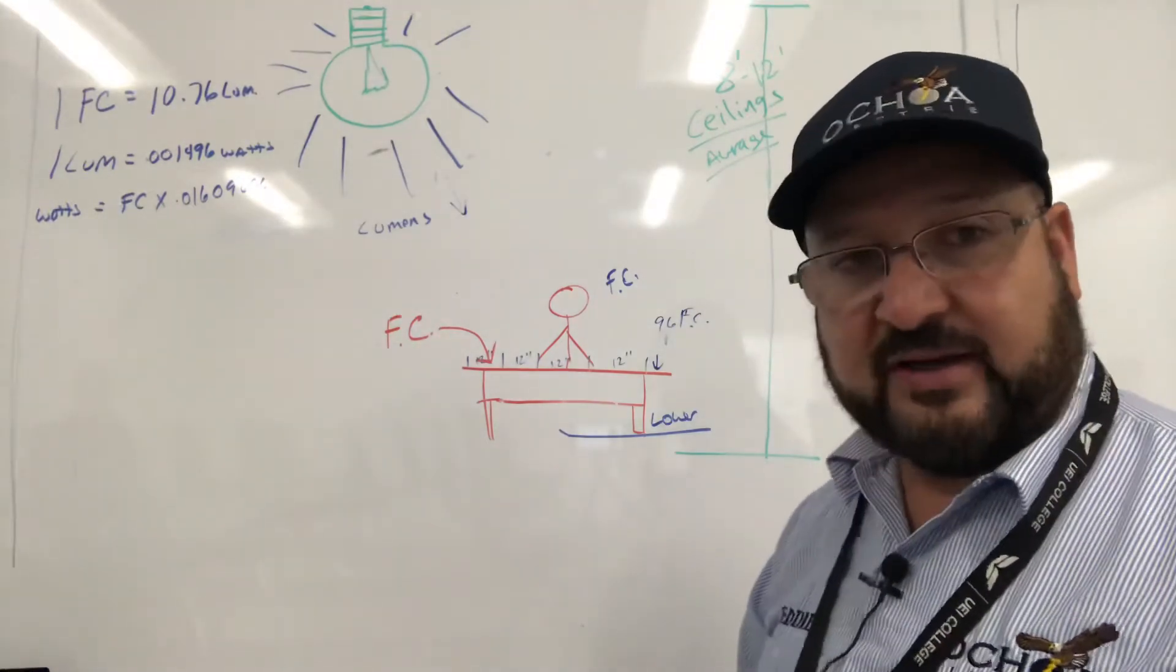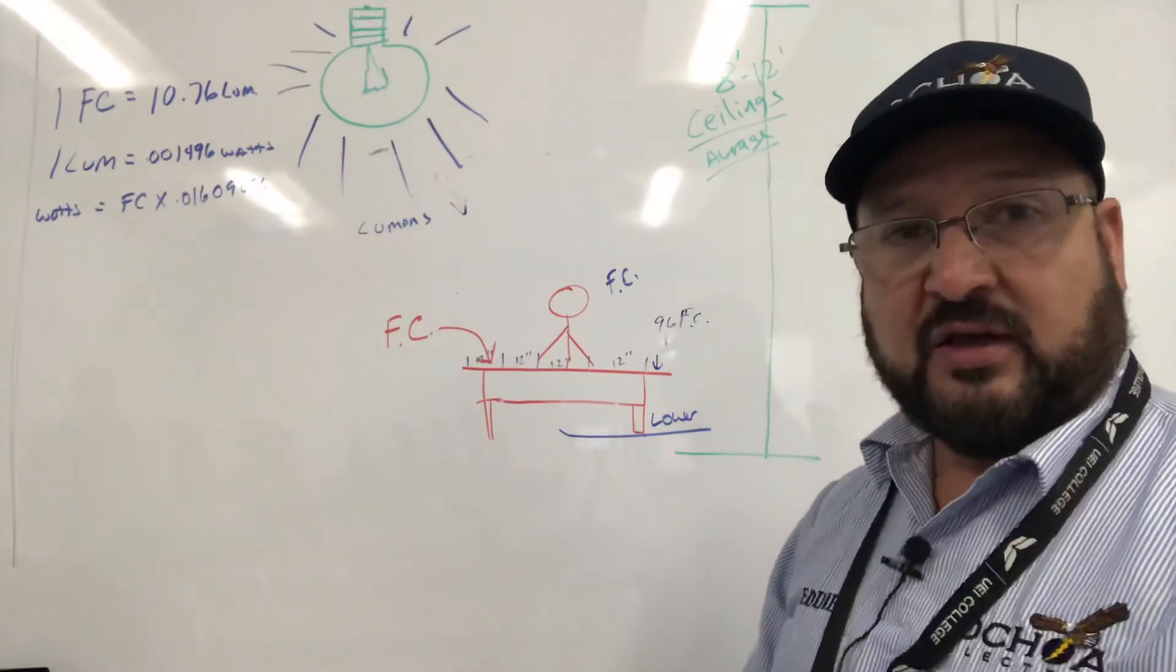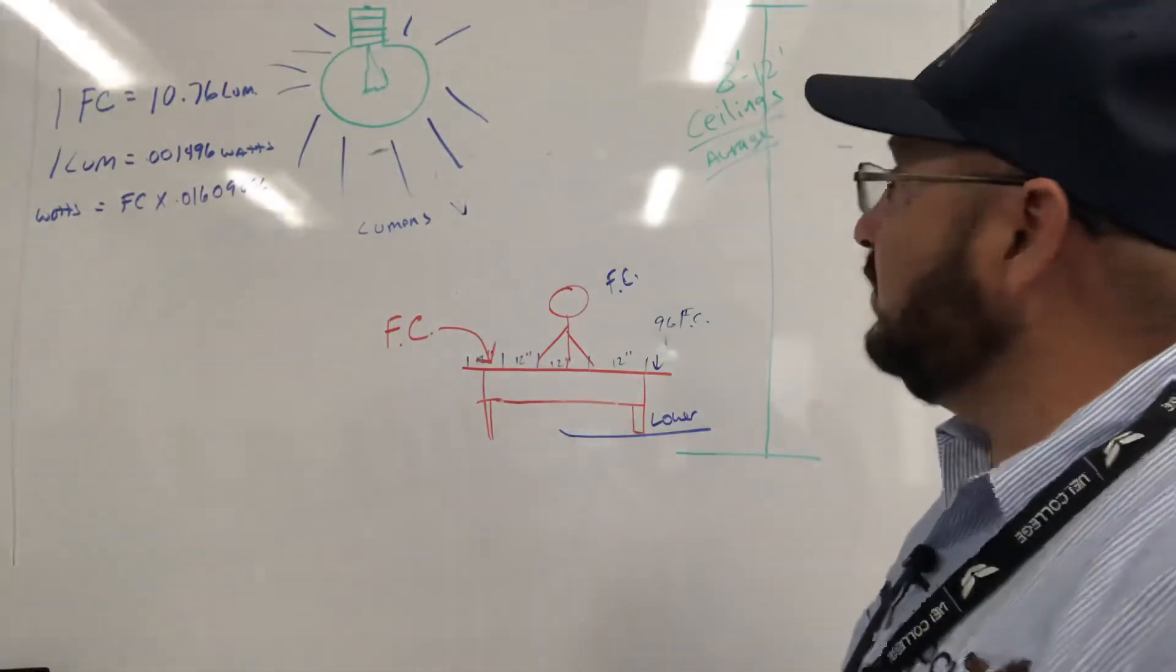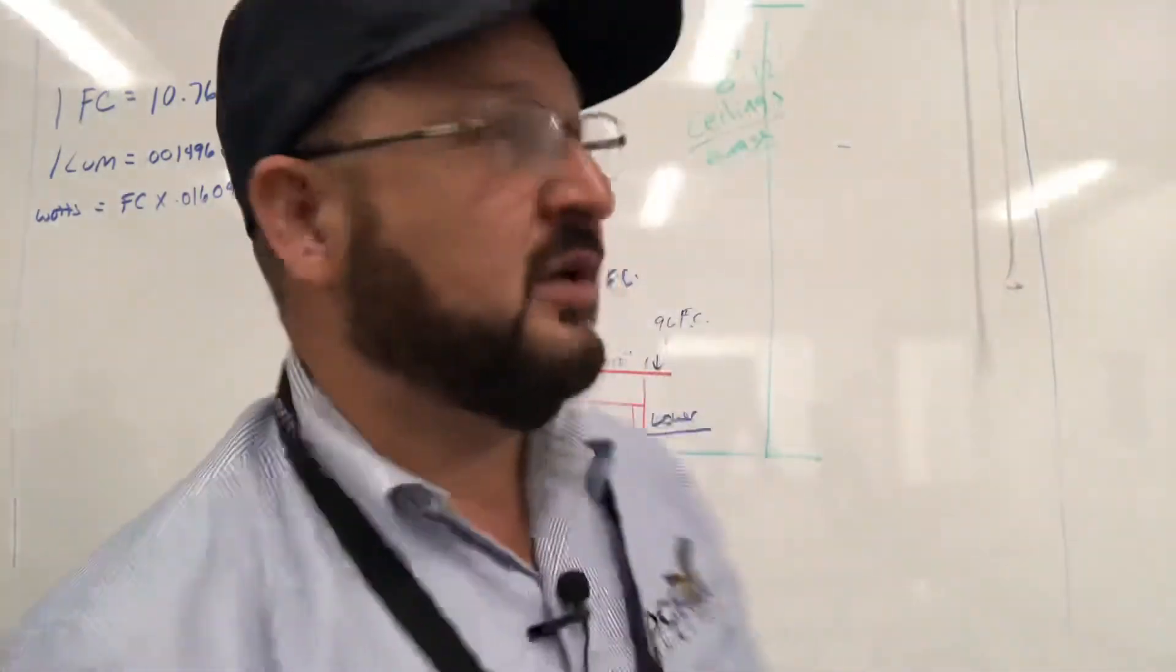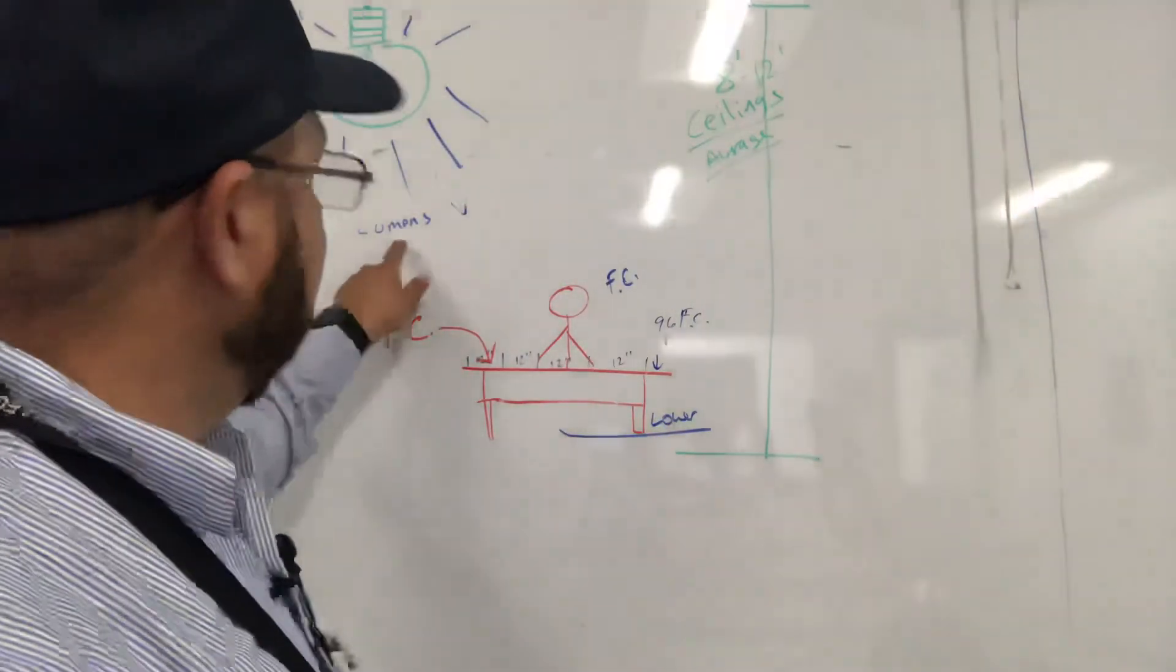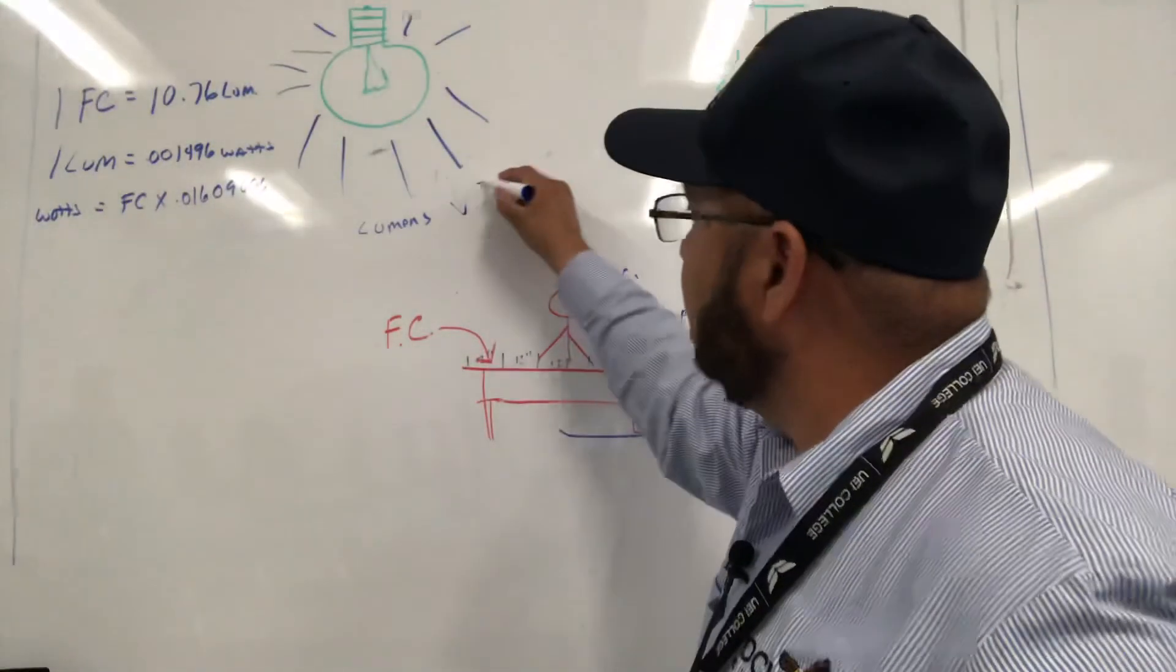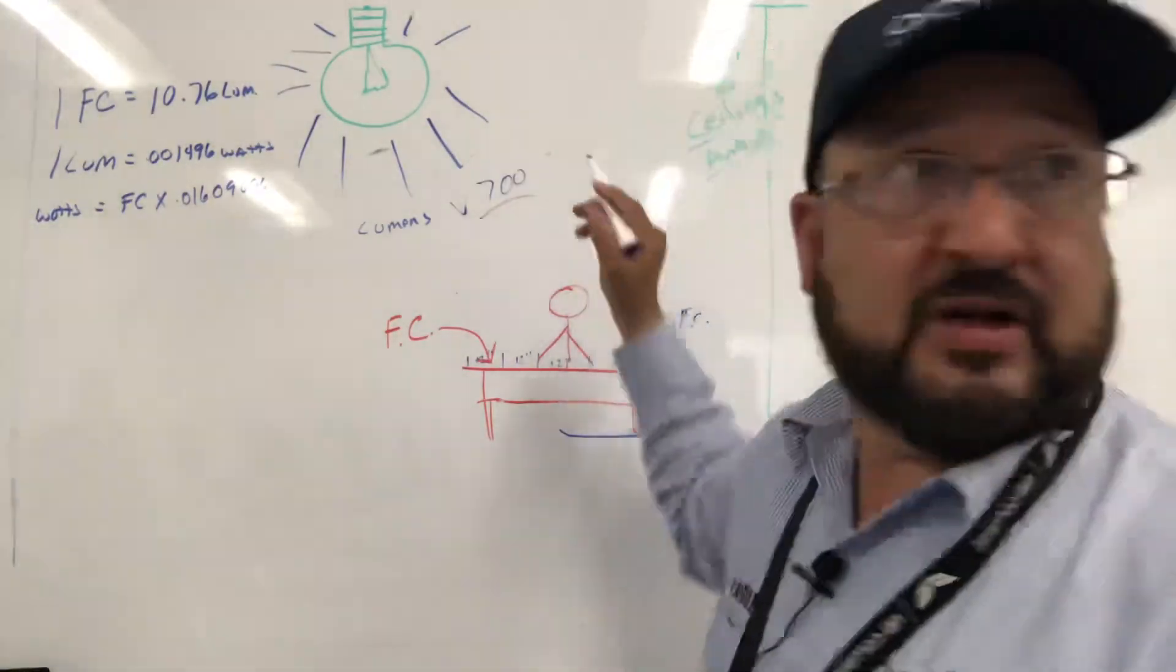Like a dentist, they need a lot of foot candles so they can see what they're doing, doctors. So it's really important that we understand foot candles and lumens because you can go to Home Depot and buy a lumens that's about 700 lumens. So you buy one fixture of 700 lumens.